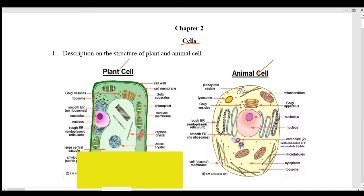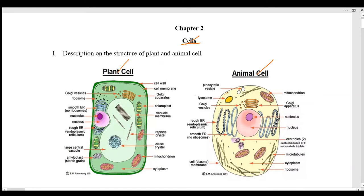We are talking here about the cell. These two diagrams are taken from Armstrong 2001 from internet sources. Let's see the differences between them. We have a plant cell and we have an animal cell. The first difference is the presence of the cell wall — it is present in plants but absent in animals.